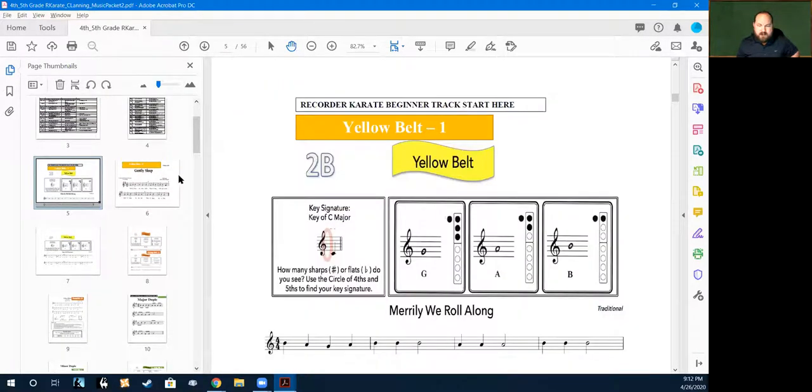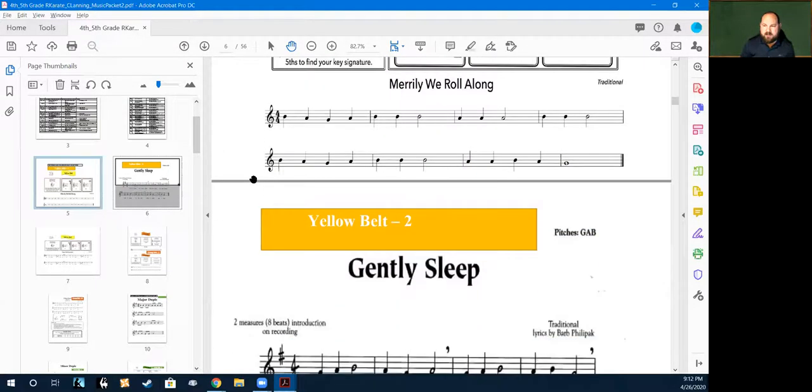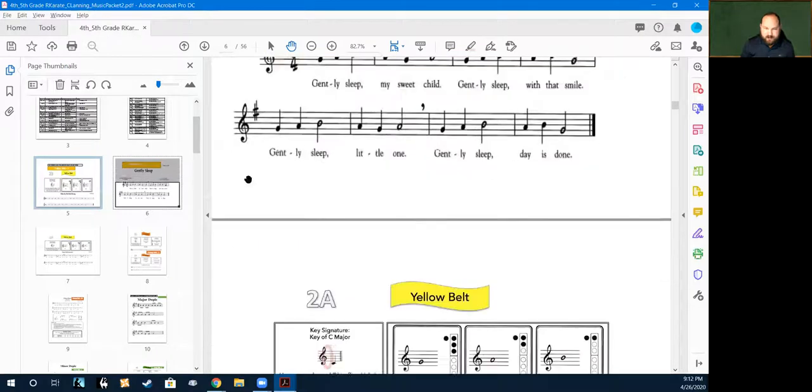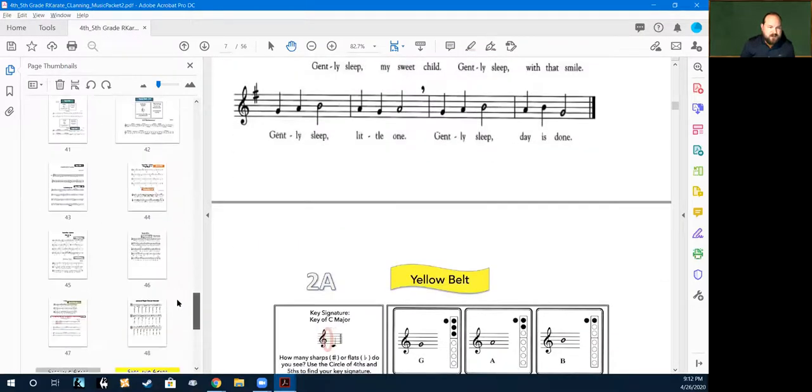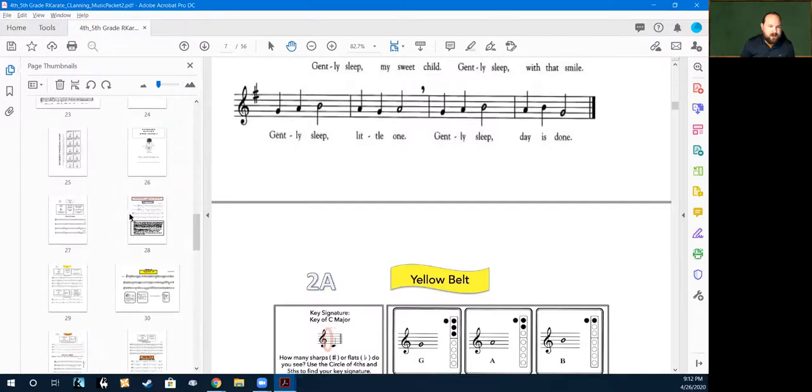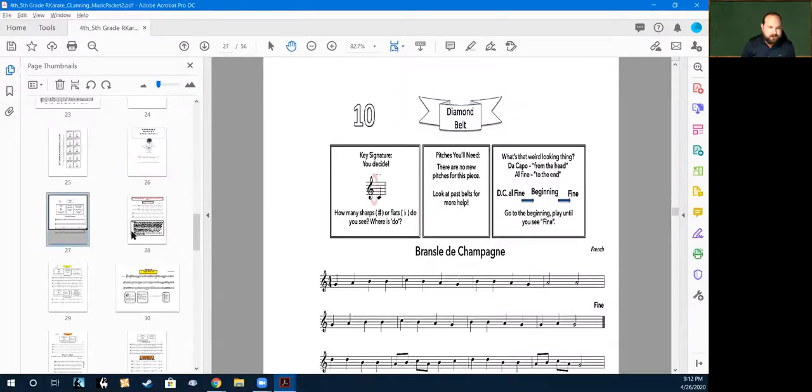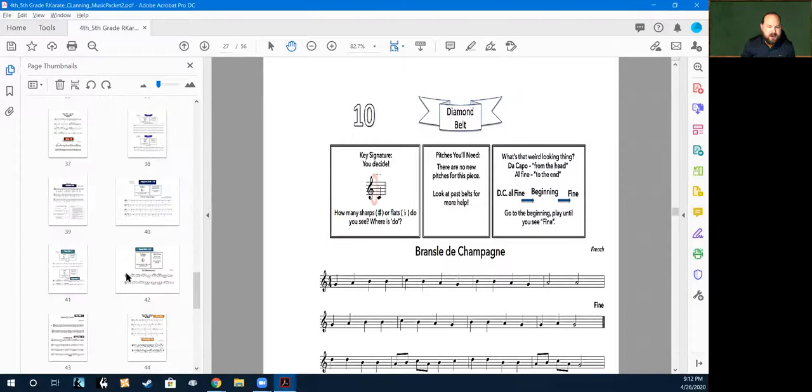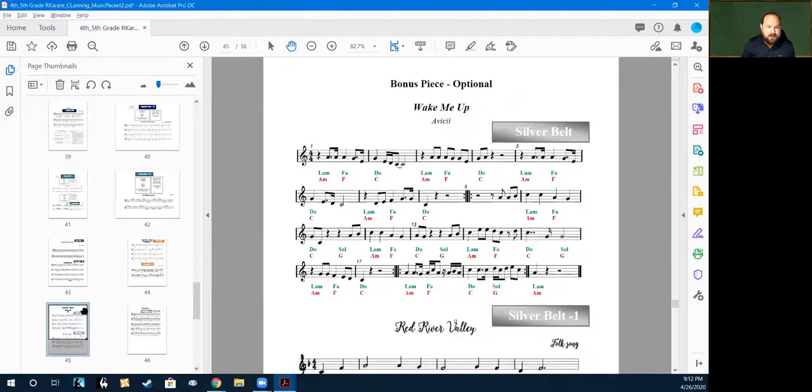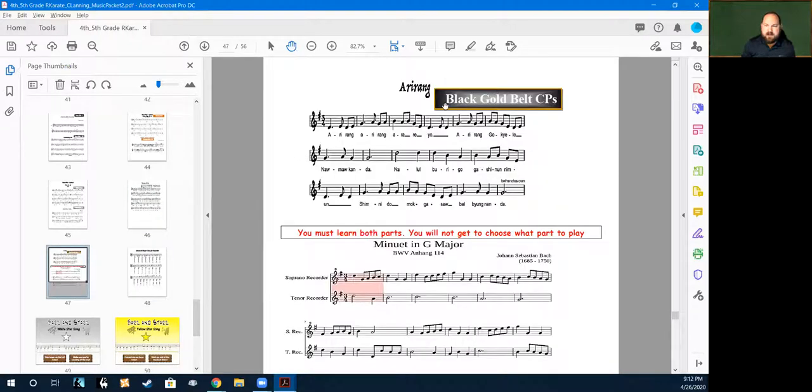The last part that I want to talk about is just what the pieces look like. They look no different than what your recorder karate packet one looked like. And then I also want to show you that right there you have book level two, and we go from diamond belt all the way to the very very top which is called a black gold belt. That would be the very very top of the recorder karate.